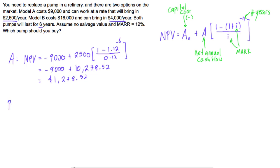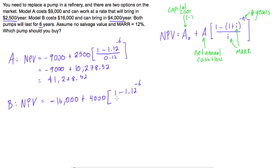Now for project B, we want to compare the two and figure out which has a better net present value. The NPV for project B equals negative $16,000 plus $4,000 times the same annuity factor: 1 minus (1.12) to the power of negative 6, over 0.12, where the MARR is 0.12. Punching this into your calculator, the annuity term comes out to $16,445.63.